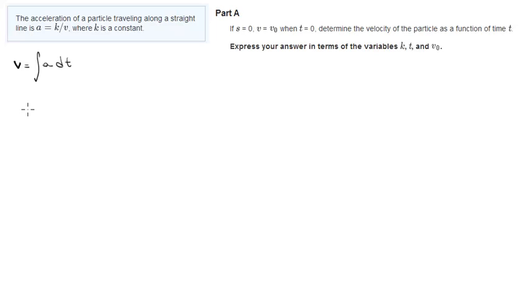The velocity is equal to the integral of the acceleration over time, which is given to us as k over v. This can be rewritten as the integral from 0 to v of dv and the integral from 0 to t of k over v dt. Now what we're going to do is pass this v to this side.